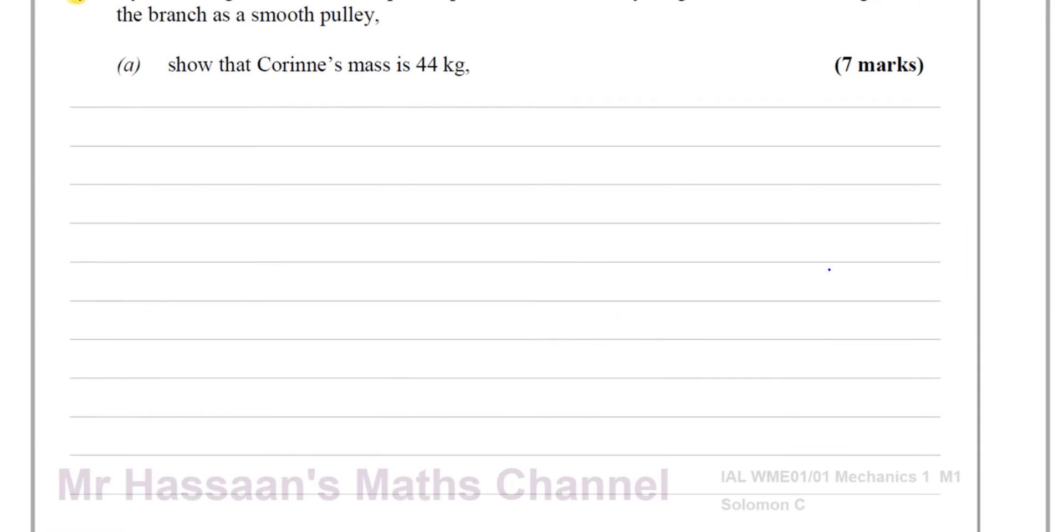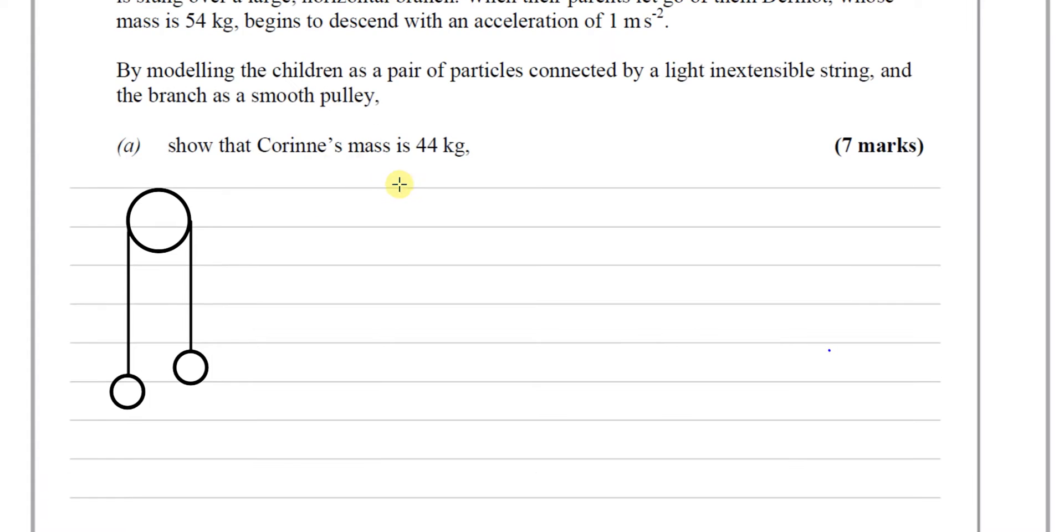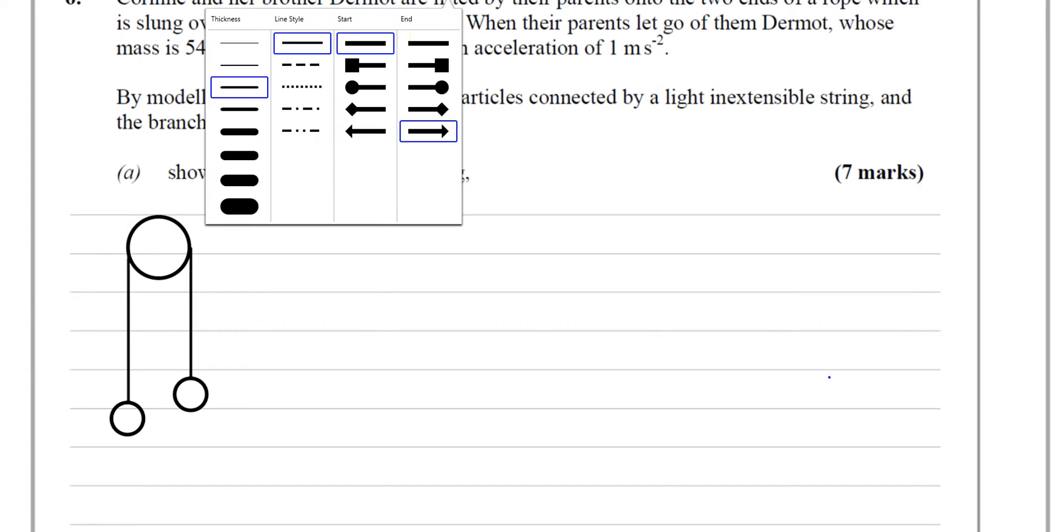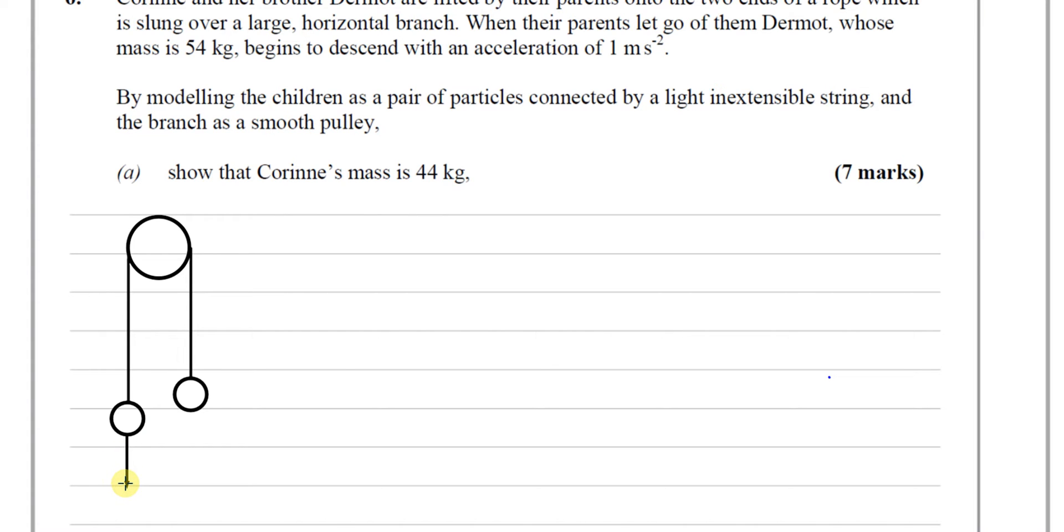So we have to imagine it's this type of situation where you have a pulley and two particles on either end hanging from a string. You've got Corinne and you've got Dermot. Let's put in some forces here. You've got their masses, their weights acting vertically downwards.